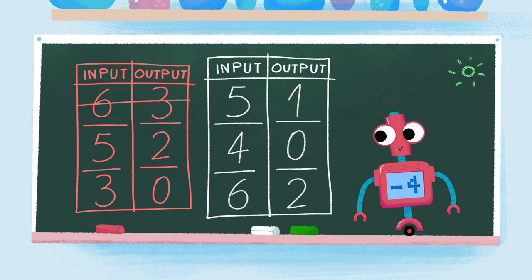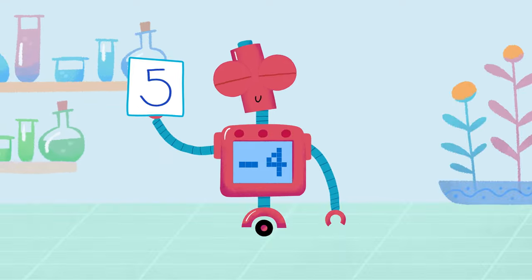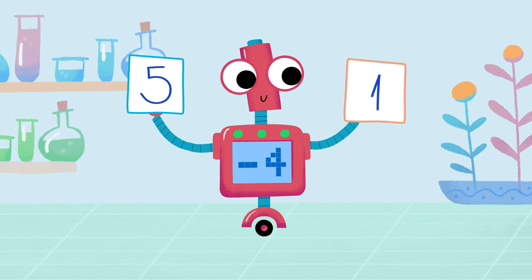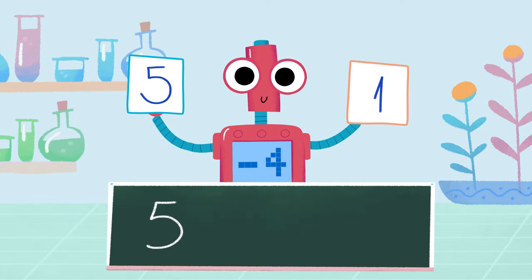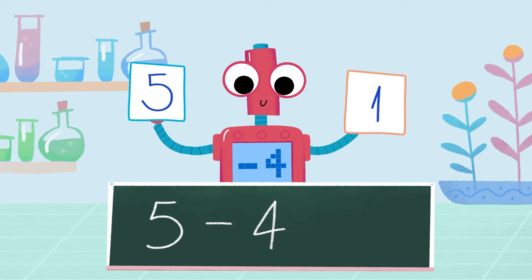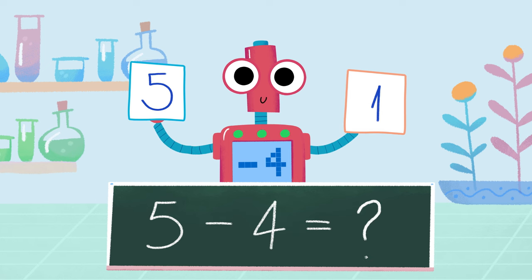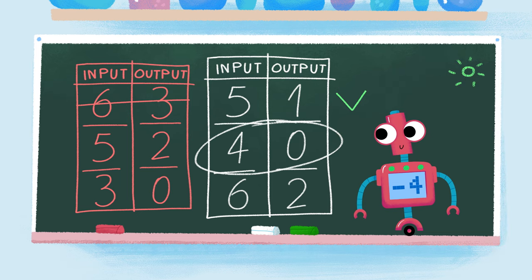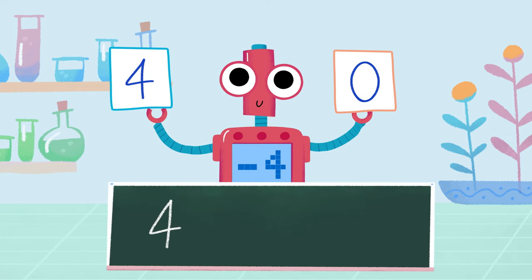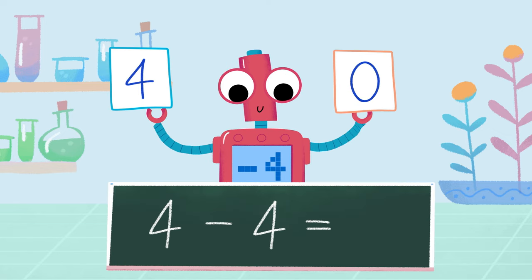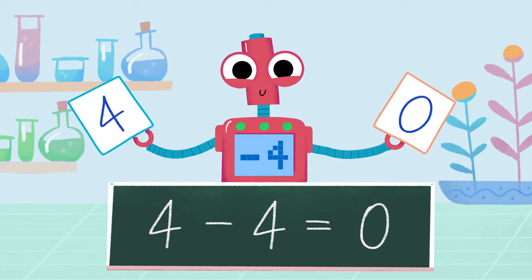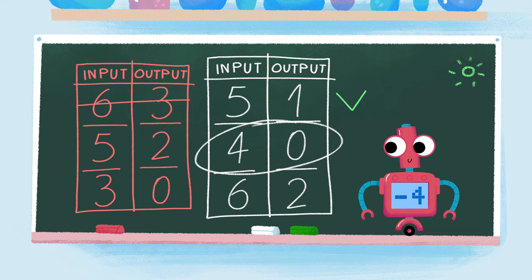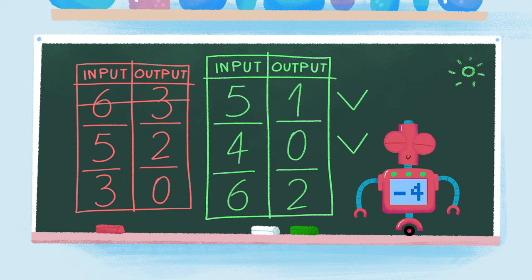We have one more table to check. The first input here is five and the output is one. If five goes in and we take away four like the rule says, do we get one? Yes, we do. What about the next row? The input is four and the output is zero. Four take away four is zero, just like the output. Great. The rule subtract four works with this table.